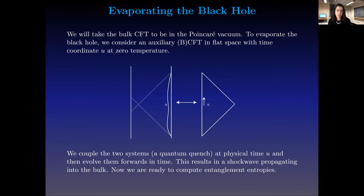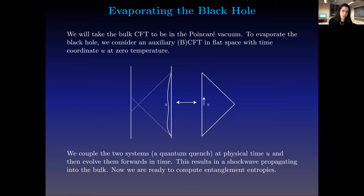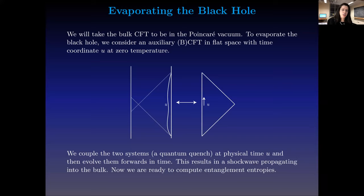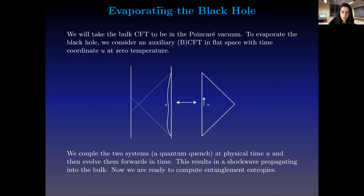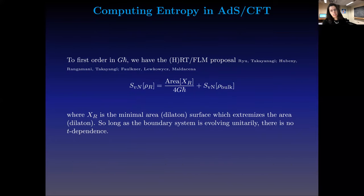Now we're ready to compute entanglement entropies. We could just calculate the entropy of the bath — that's an analogy of the entropy of the radiation — and we would essentially reproduce the Hawking calculation, getting information loss. Or we can use the quantum gravity ingredient we have on hand: the holographic prescription for entanglement entropy.